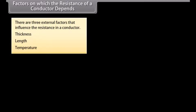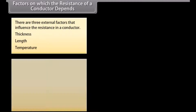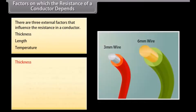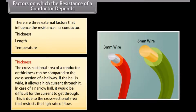The cross-sectional area of a conductor, or thickness, can be compared to the cross section of a hallway. If the hall is wide, it allows a high current through it. In the case of a narrow hall, it would be difficult for the current to get through, due to the cross-sectional area restricting the high rate of flow.